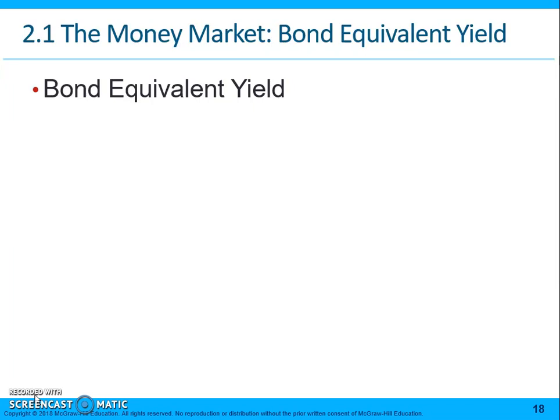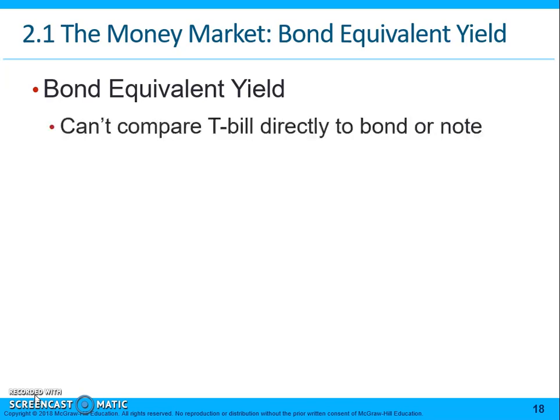The first calculation we're going to do is to calculate the bond equivalent yield, also simply referred to as the yield or yield to maturity. You can't compare a T-bill directly to a treasury bond or note — T-bills are calculated on an actual 360-day basis.